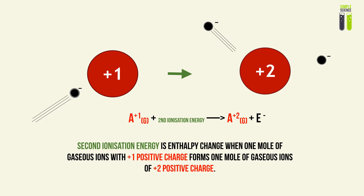The second ionization energy, similarly, would be the enthalpy change when one mole of gaseous ions with plus-one positive charge forms one mole of gaseous ions with plus-two positive charge. In other words, the second ionization energy is the energy change needed for a plus-one ion to lose a second electron to form a plus-two ion.